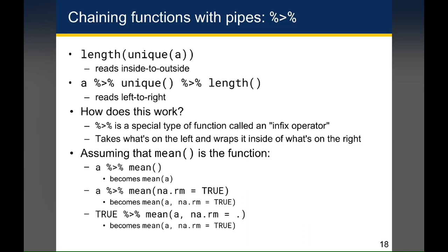And this third example is something that you're probably not going to use very often, but it's just to let you know that the default is for the pipe function to insert whatever's on the left as the very first argument on the right. If for some reason you want to insert what's on the left anywhere else, you actually have to do that by using a dot or a period. And so if you wanted, if you had the value true and you wanted to pipe that into the na.rm argument, you would,